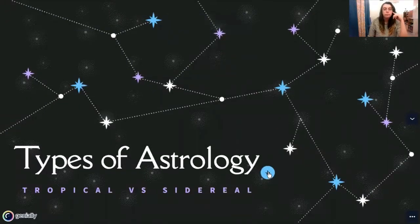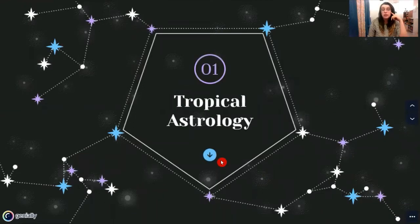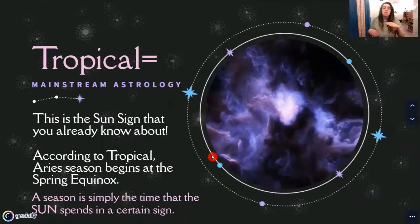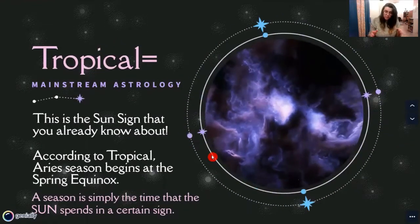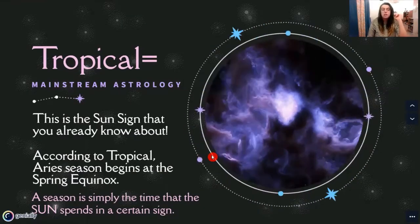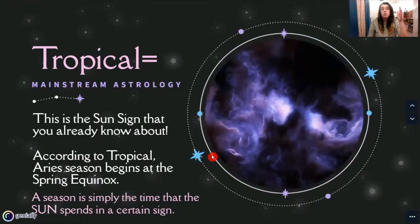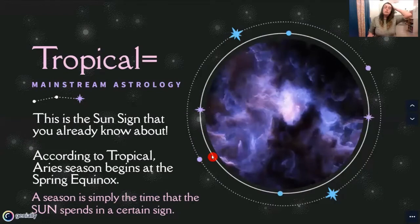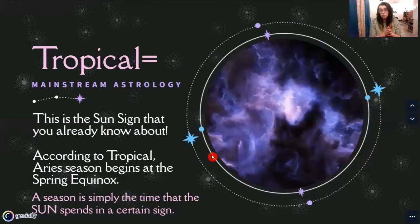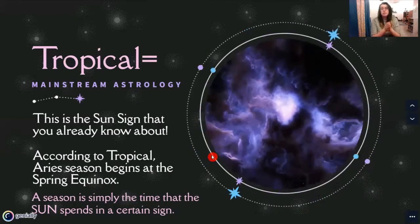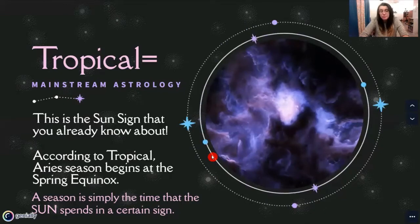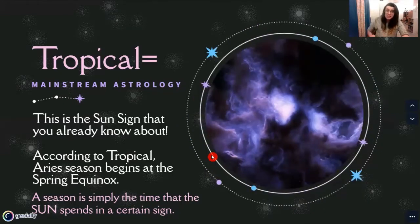So, types of astrology. First, we're going to be talking about tropical astrology. Tropical astrology is mainstream astrology — it's the astrology you know about, you hear about. It is horoscopes in the paper, it is the sun sign you know about. The basic thesis for tropical is that the start of the zodiac, which begins in Aries, begins at the spring equinox. So the spring equinox happens, and that's Aries season — the time that the sun spends in that sign.